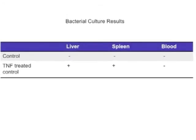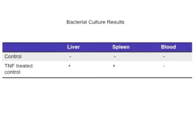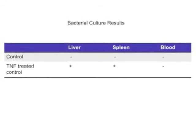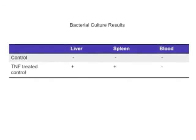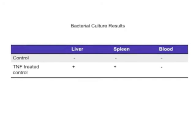The liver, spleen, and blood cultures from the saline-treated mice were all negative, while the TNF-treated mice included GFP-labeled E. coli in liver and spleen, confirming the translocation of commensal bacteria through the intestinal epithelial barrier.